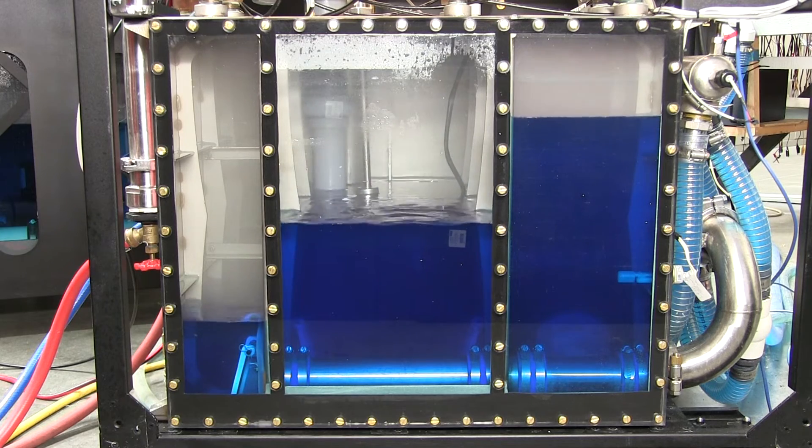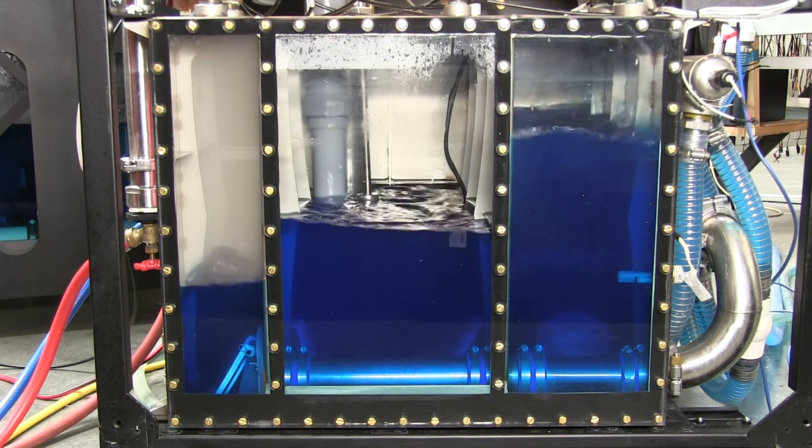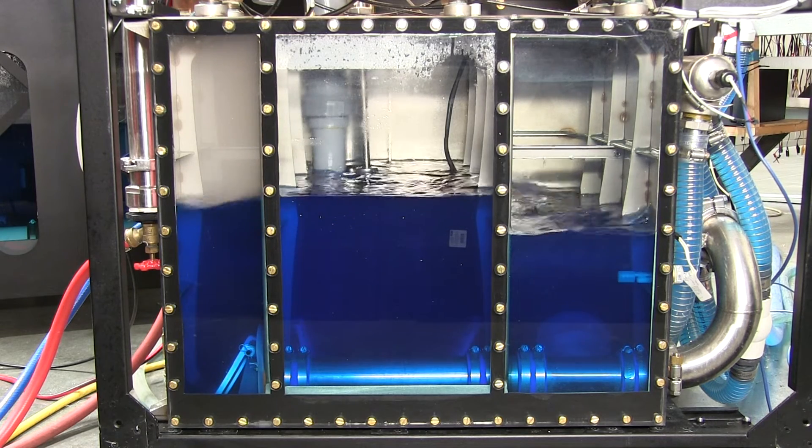When the main chamber gets to a full level, then we apply vacuum to an auxiliary chamber, and we drain the main chamber back into the reservoir.